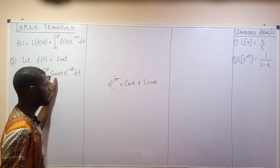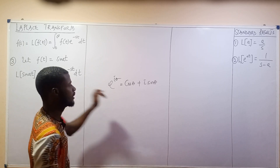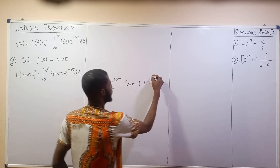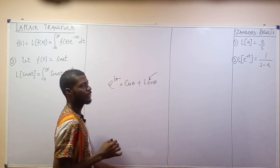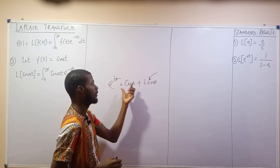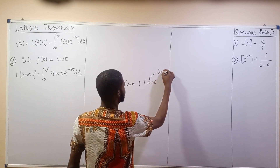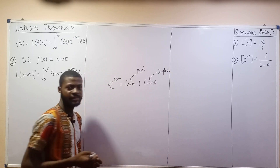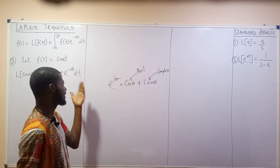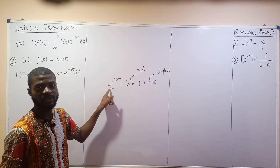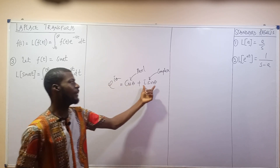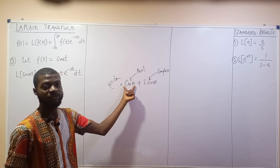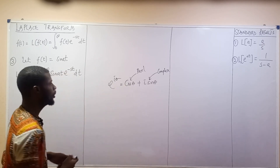Since we are solving for sine, that means sine is at the imaginary part. Remember complex numbers: for a number to be complex it has an imaginary part and a real part. So if we need sine after evaluating using the exponential i theta formula, we pick the imaginary part for sine and the real part for cos.